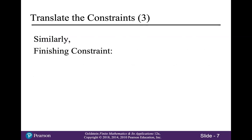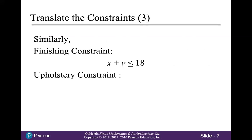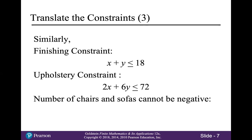Similarly, the finishing constraint is going to be X plus Y is less than or equal to 18, because each chair and each sofa required one hour of finishing — so this is really 1X plus 1Y. The upholstery constraint turns into 2X plus 6Y is less than or equal to 72, because each chair required two hours of upholstery, each sofa required six hours of upholstery, and there is a maximum of 72 labor hours available per day for upholstery. Finally, the number of chairs and sofas can't be negative, so X and Y both have to be greater than or equal to zero.